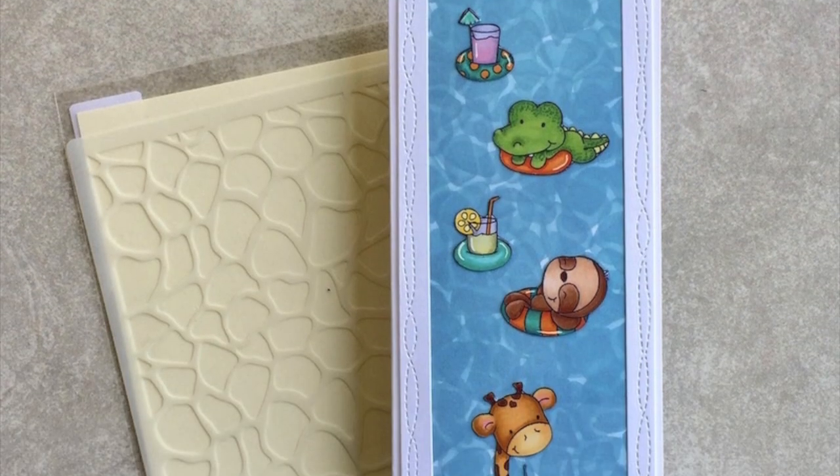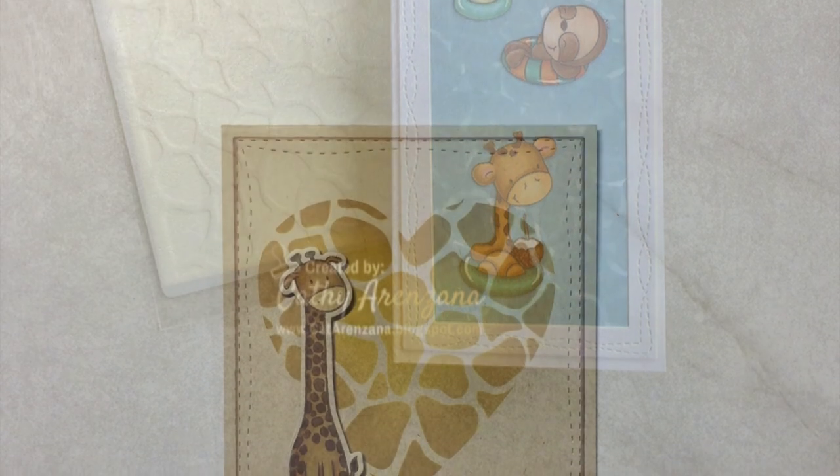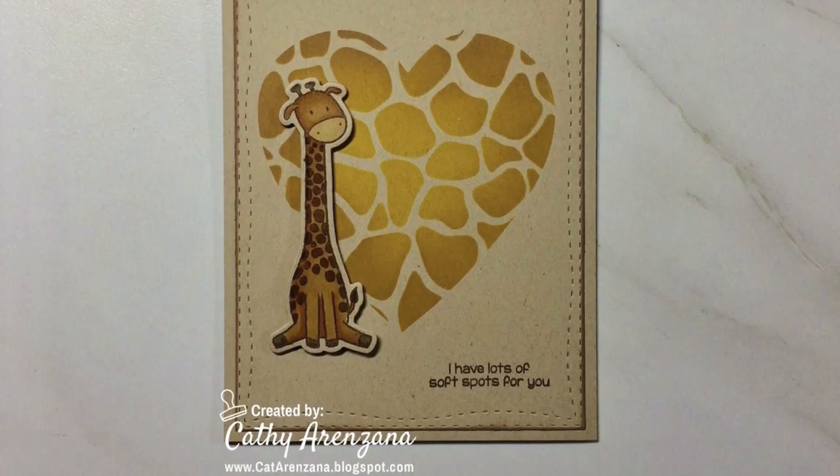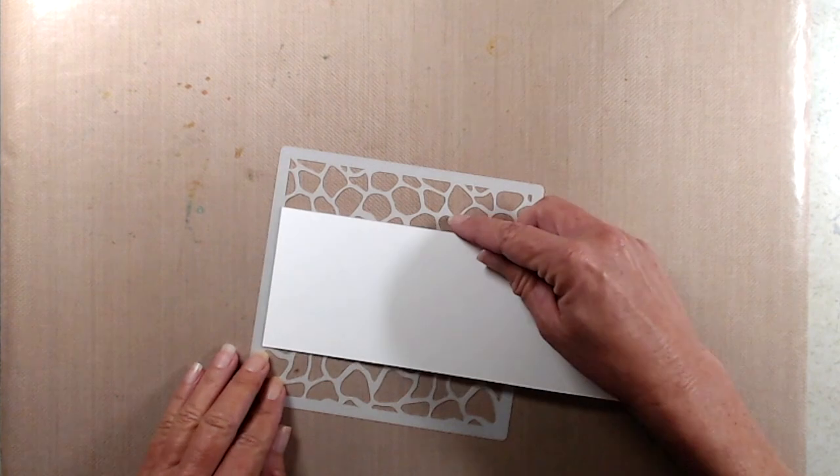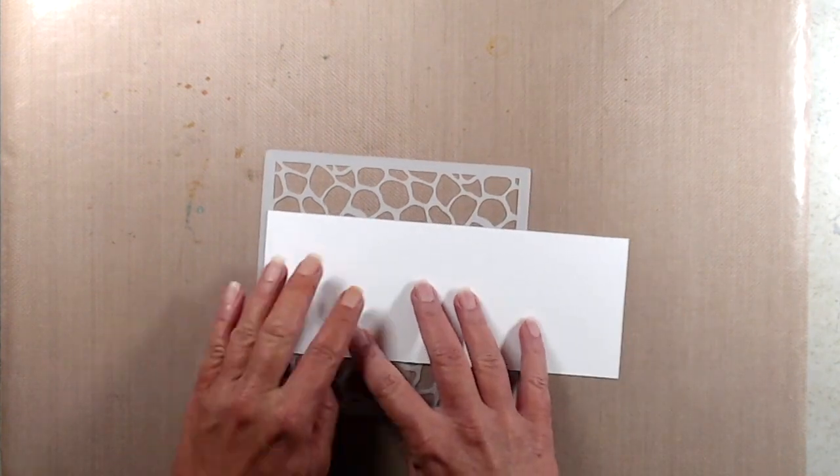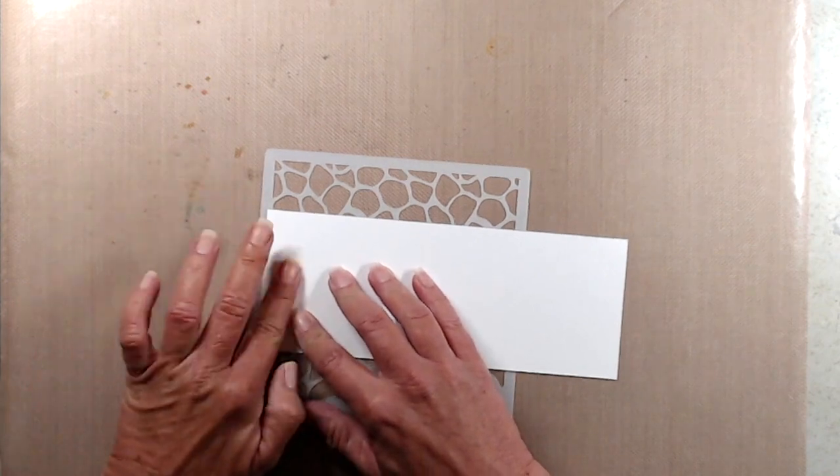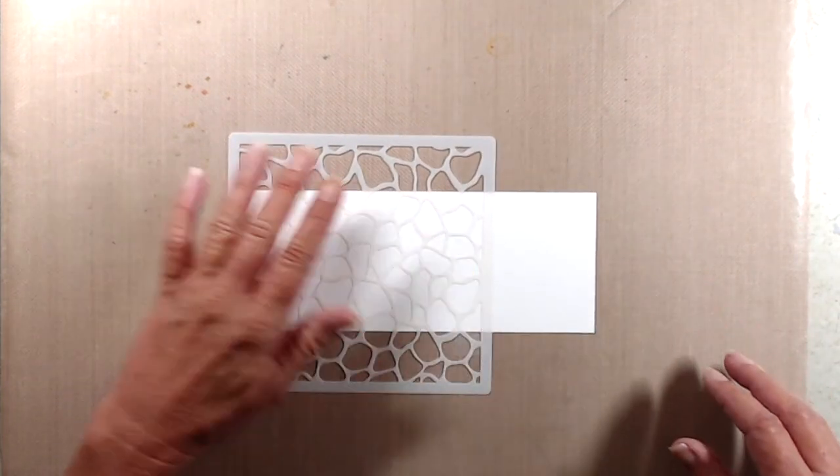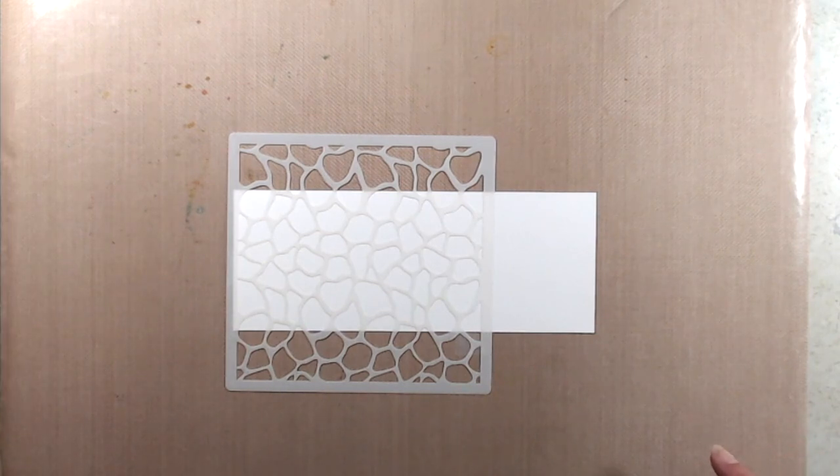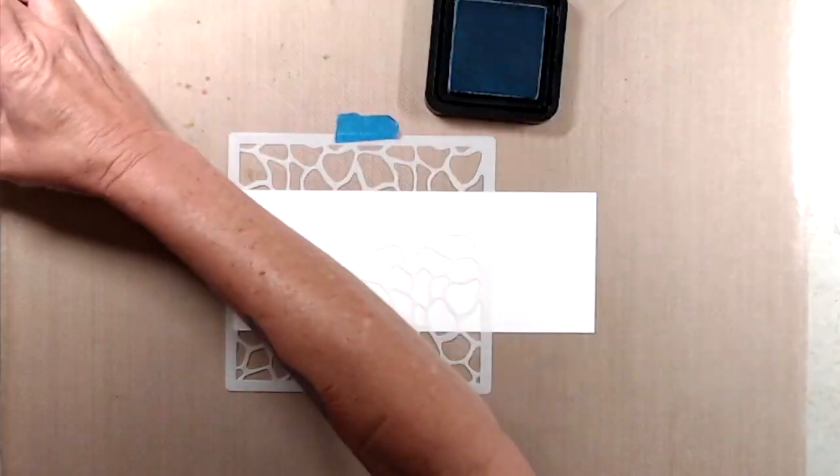Moving on to the second card, I'll be using a giraffe stencil to create the pool water on the slimline card. And here's a look at the first card I created using the giraffe stencil as a giraffe print. I was inspired to use my giraffe stencil because My Favorite Things had recently released a stencil called the Perfect Pool Pal or Perfect Pool Stencil, and when I saw how it was being used to create the look of water, I knew that I could use my giraffe stencil to create the same type of look.